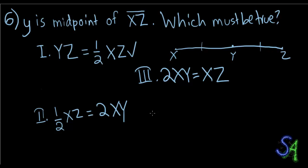Half of XZ equals to 2 of XY. So let's pick half of XZ. Half of XZ apparently equals to 2XY, but half of XZ equals to XY or to YZ, depending on which one you're doing. So we know that this one is wrong.